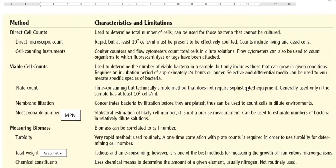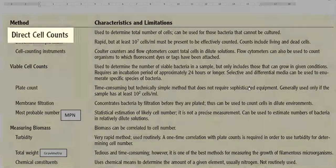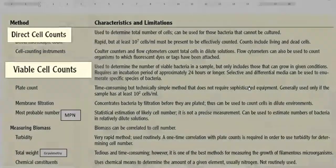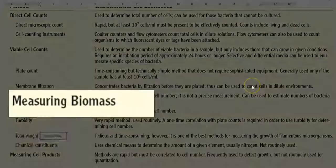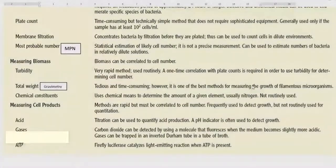Dear students, in this screencast video lecture, we are going to see the different methods that have been employed to measure the growth of microorganisms. These methods have been divided into direct cell counts, viable cell counts, measuring of the biomass, and measuring of the cell product.